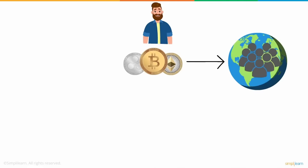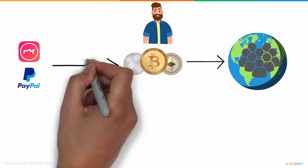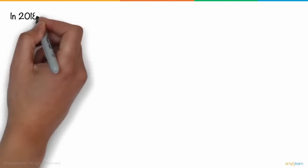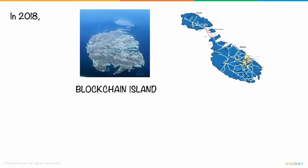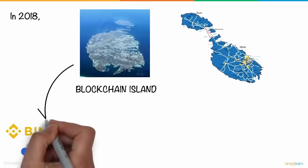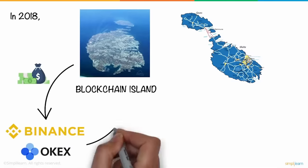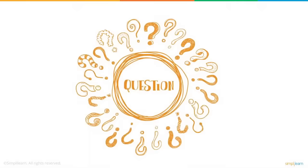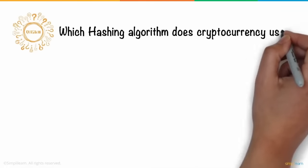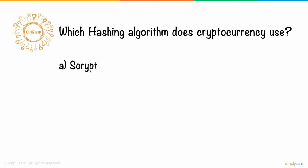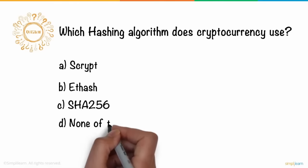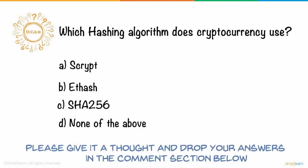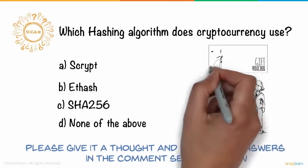Due to increasing popularity, new companies like Meitu and PayPal are investing in cryptocurrency every day. In 2018, Malta — an island in the Mediterranean Sea south of Italy — was titled 'Blockchain Island' as it led to the economic stability of the nation. Fintech companies like Binance and OKX have moved their headquarters there. Here is a question: which hashing algorithm does cryptocurrency use? A) Scrypt, B) Ethash, C) SHA-256, D) None of the above. Drop your answers in the comments — three lucky winners will receive Amazon gift vouchers.